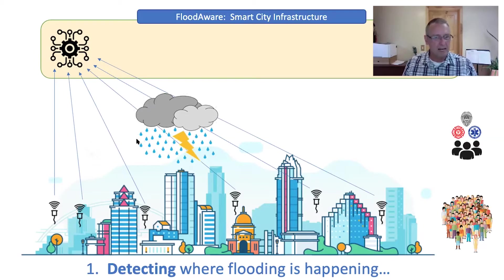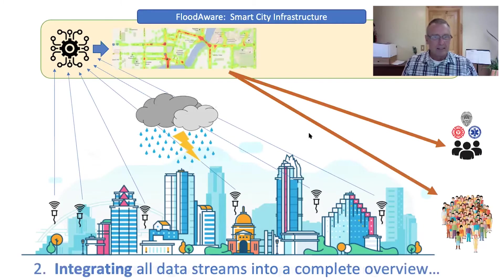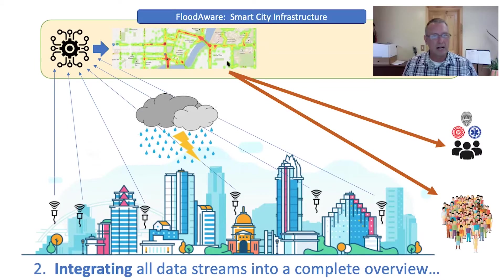As the storm starts falling, what you'd want in a smart city is thousands of sensors represented by these spots on the graphic, somehow sensing the flooding levels throughout the entire city. Those sensors are picking up flooding levels and sending them all to the FloodAware system — the smart city infrastructure. So the first challenge is detecting where flooding is happening, and we're going to need to invent some technology for that. Next, the smart system needs to integrate all of those data streams and process the flooding information into a graphical overview — for example, a map where hot spots show where flooding is occurring.